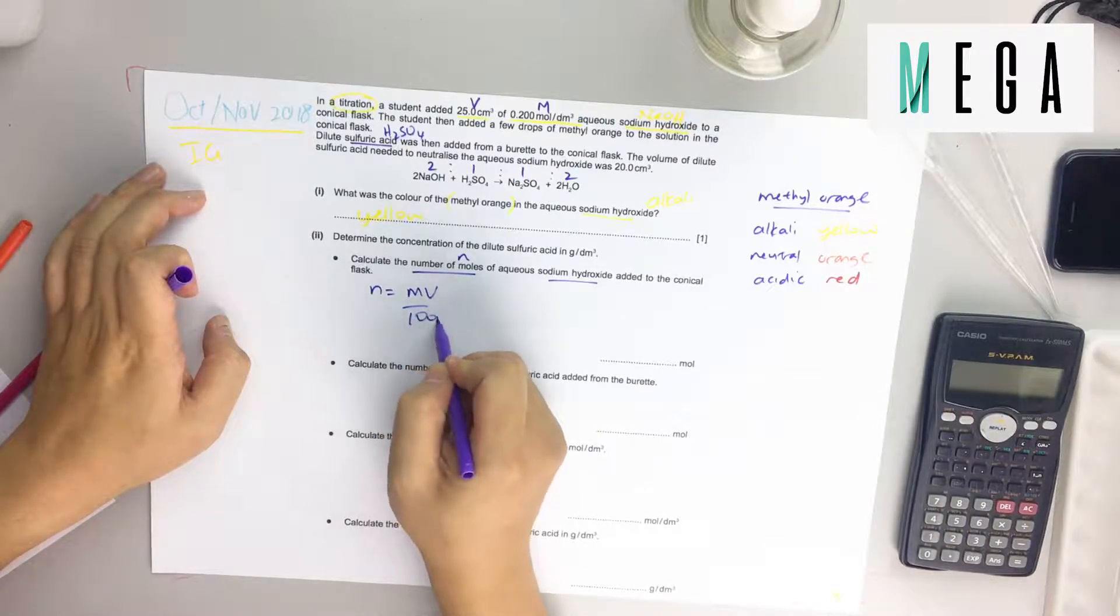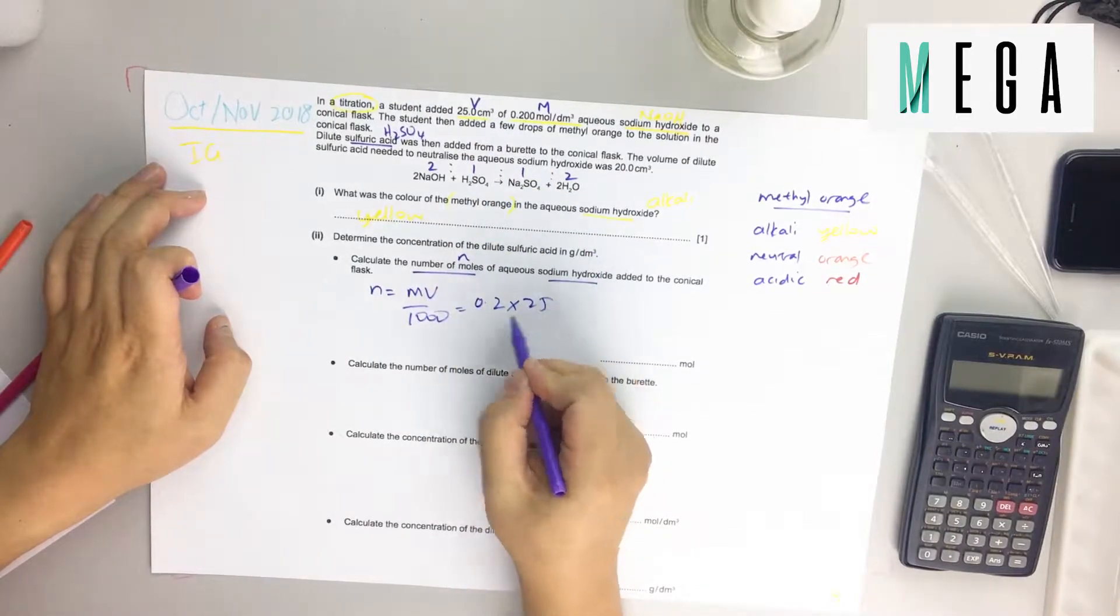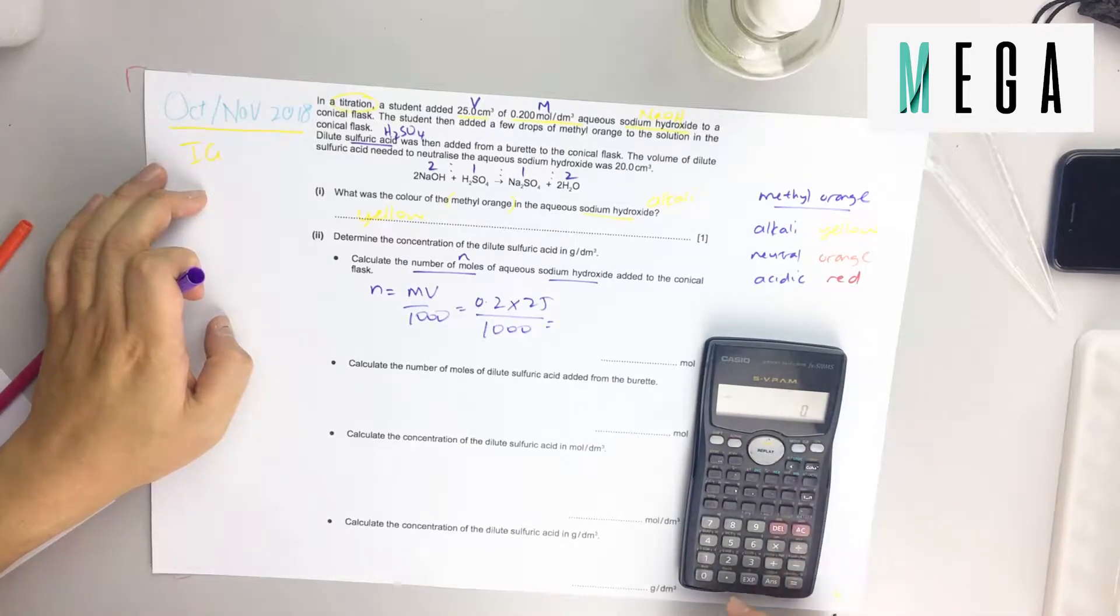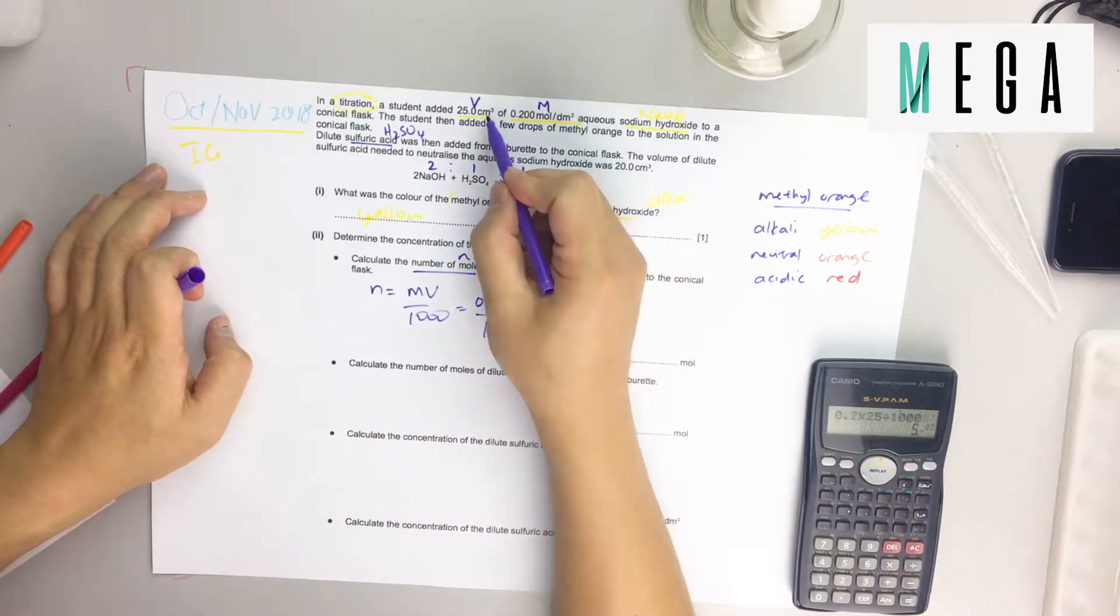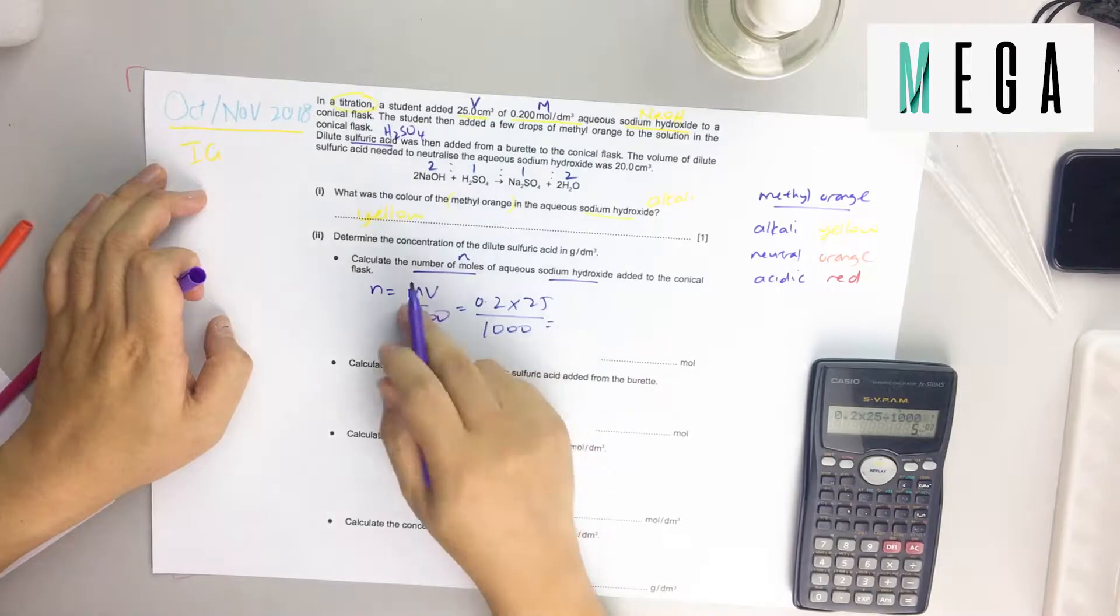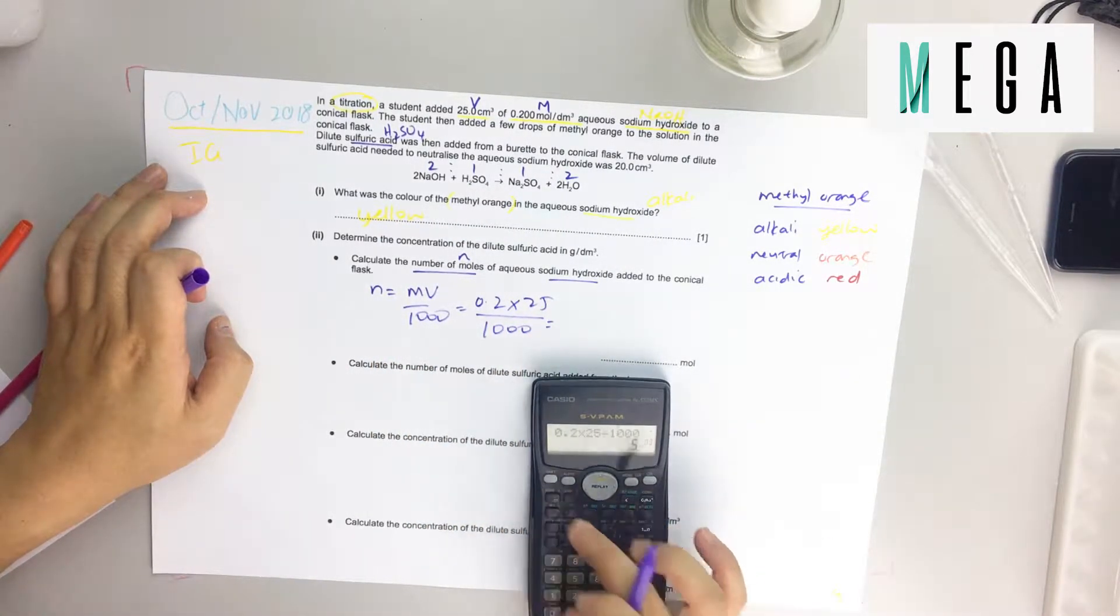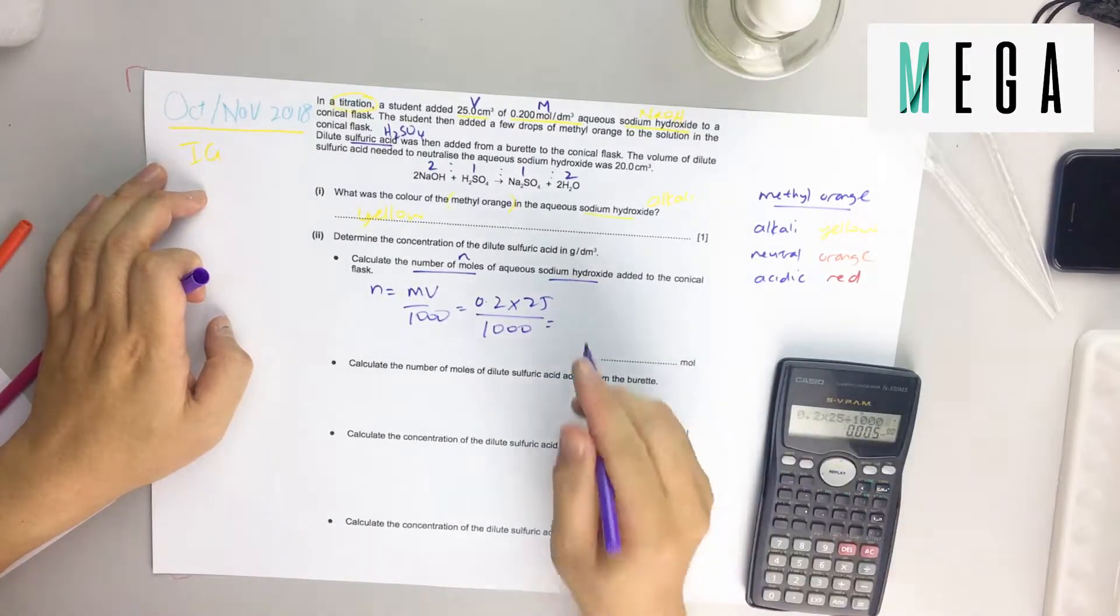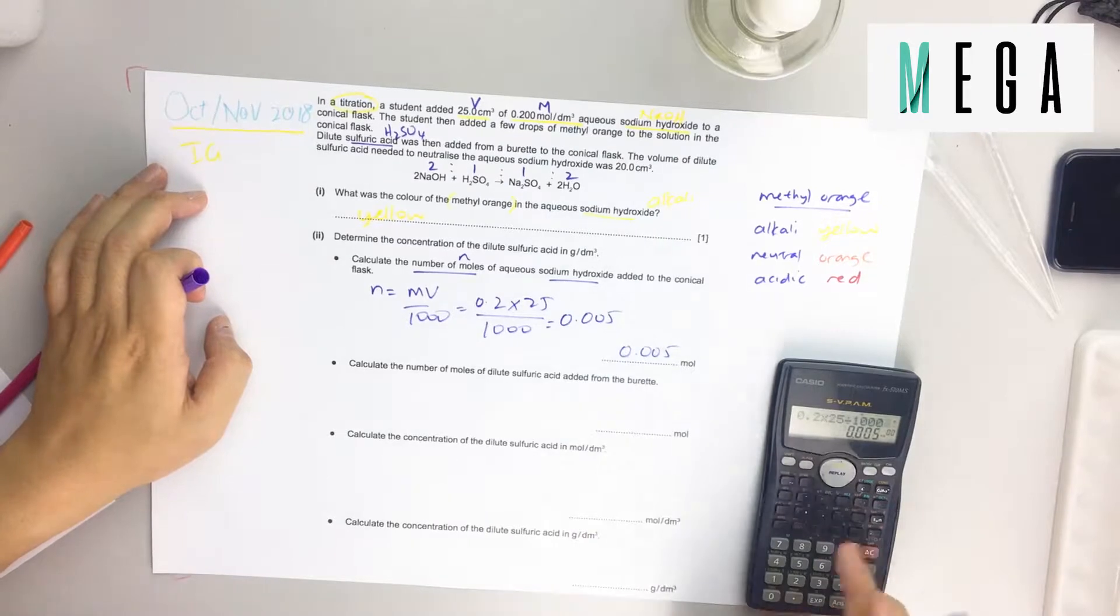M here is 0.2, V is 25 divided by 1000. Use your calculator: 0.2 times 25. This formula is convenient because we already have cm³, you can just immediately put it in. You can press shift E and G to see clearly: 0.005. Make sure you write the answer here.